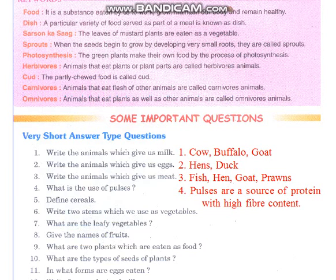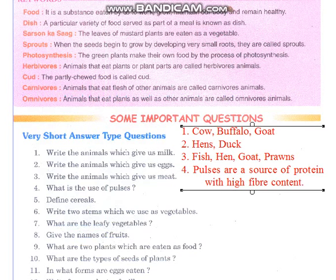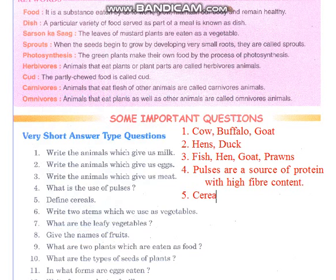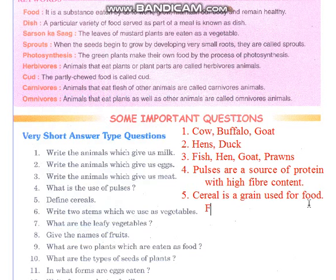So you can write it like this. After that, number 5: define cereals. Cereal is a grain used for food. For example, wheat, maize, etc. Okay, cereals.